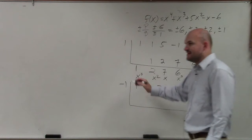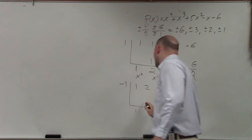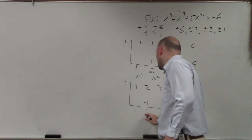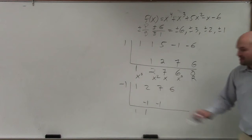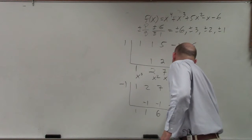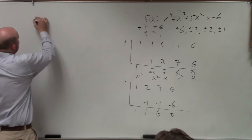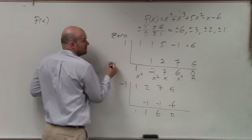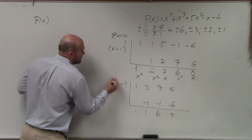Let's go and try negative 1 to see if it works. Bring down the 1. 1 times negative 1 is negative 1. 2 plus negative 1 is 1. 1 times negative 1 is negative 1. 7 plus negative 1 is 6 — and that works too. So if 1 is a zero, the factor is x minus 1. If negative 1 is a zero, the factor is x plus 1.